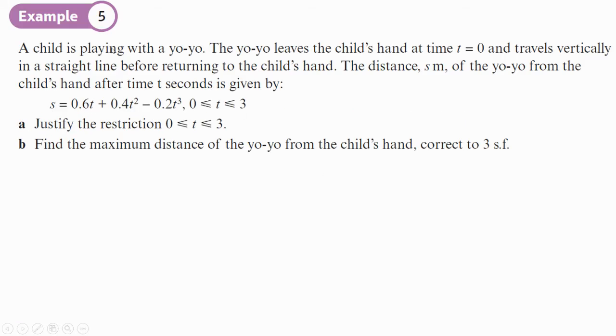Next question we'll look at. So, a child is playing with a yo-yo. Yo-yo leaves the child's hand at time when t equals 0. Travels vertically in a straight line before returning to the child's hand. The distance s meters of the yo-yo from the child's hand after t seconds is given by this. So, the first question is asking us to justify the restriction 0 to 3. It's getting a little bit more tricky now.